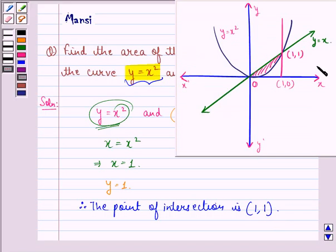So this is how we draw the figure. This is the parabola y equals x square. This is the line y equals x. So this is the required area, the shaded area.